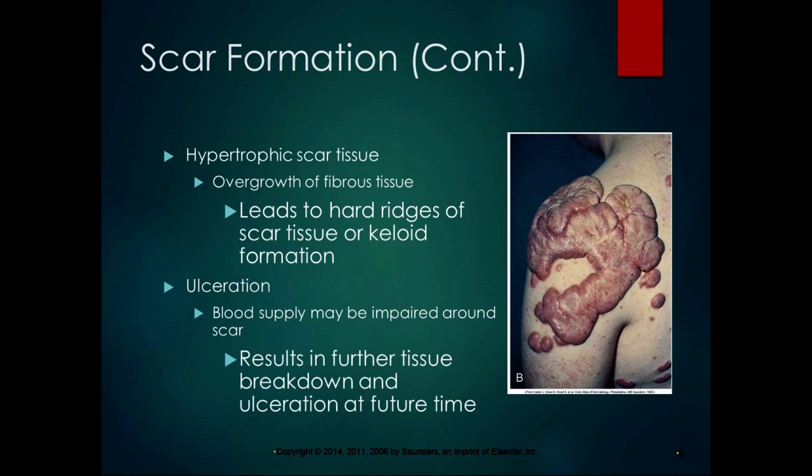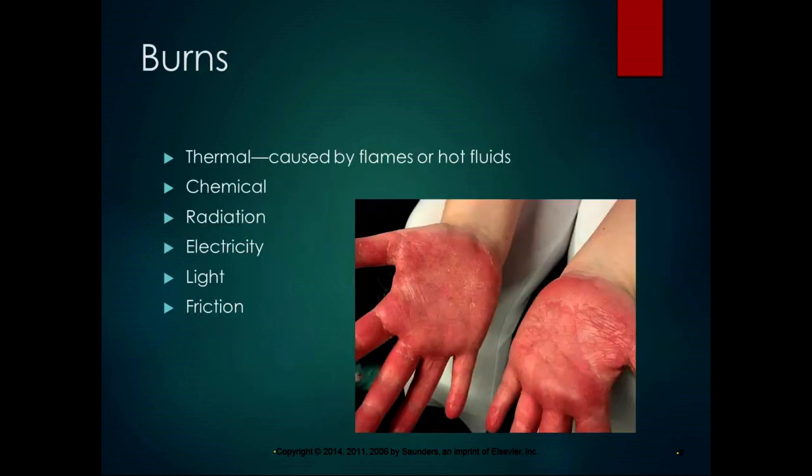With ulceration, blood supply can be impaired around the scar and result in further tissue breakdown and potentially ulceration at a future time — tissue damage makes bigger scars, essentially. Burns are a particular type of injury that can cause extensive scarring, and I've seen a lot of burn questions on board exams, so it's good to be familiar with them. Burns can be thermal — caused by flames or hot fluids — chemical, caused by radiation, electricity, light like sunburns, or friction like rope burns.